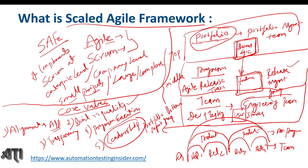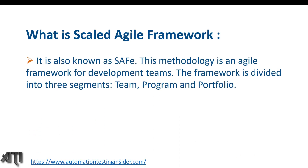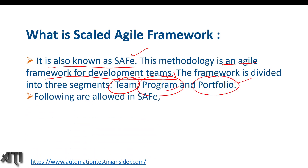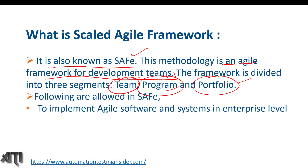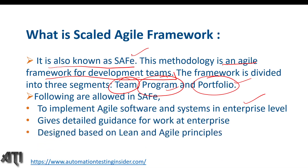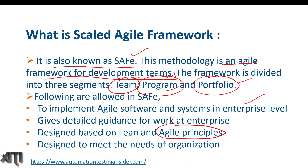To recap: the Scaled Agile Framework is known as SAFe. It is an agile framework for development teams. The framework is divided into three segments: Team, Program, and Portfolio. SAFe allows implementing agile software and systems at enterprise level, gives detailed guidance for work at enterprise, is designed based on lean and agile principles, and is designed to meet the needs of the organization.